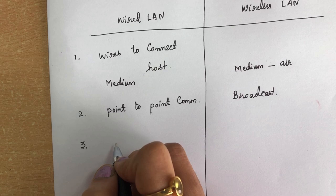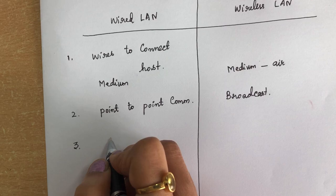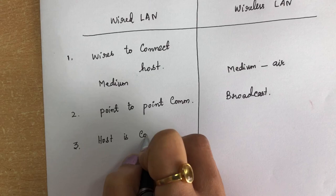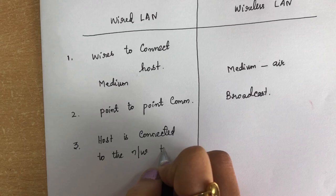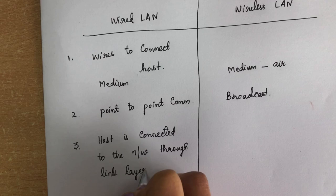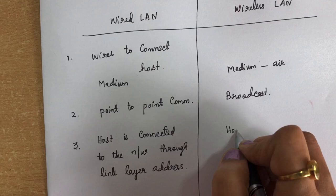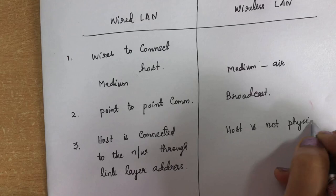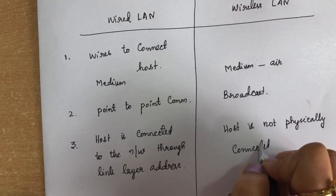The second difference is that in wired LAN, the host is connected to the network through link layer addressing, which we have studied in ARP protocol. In wireless LAN, the host is not physically connected to the network, since we are not going to use any wires.